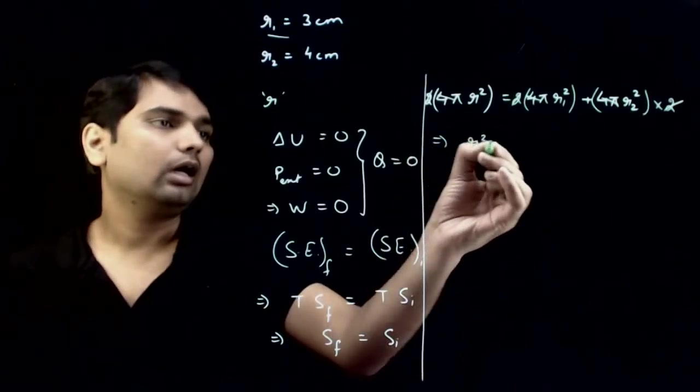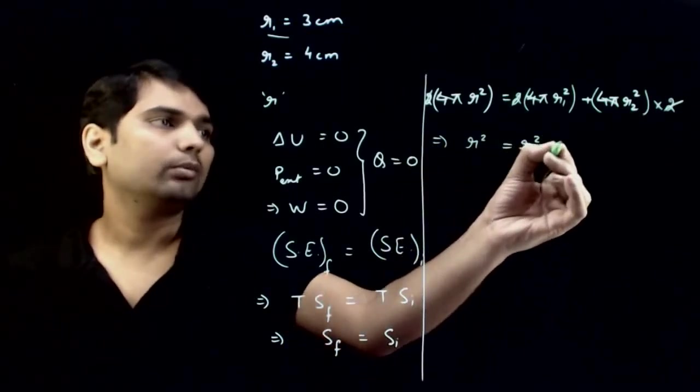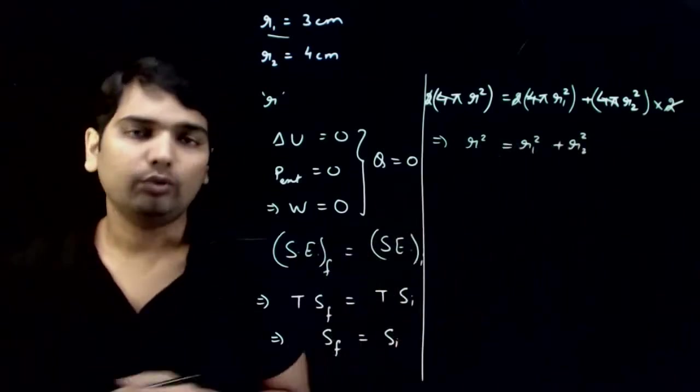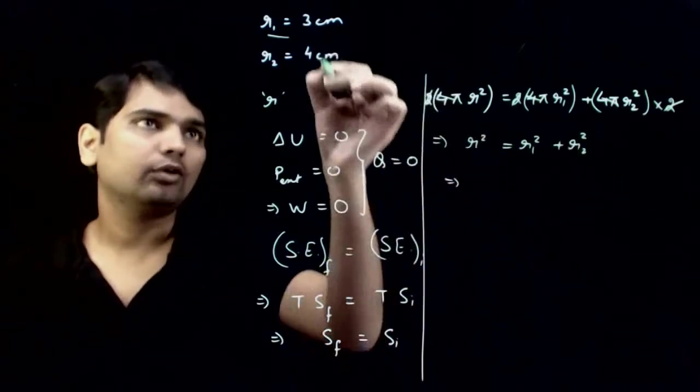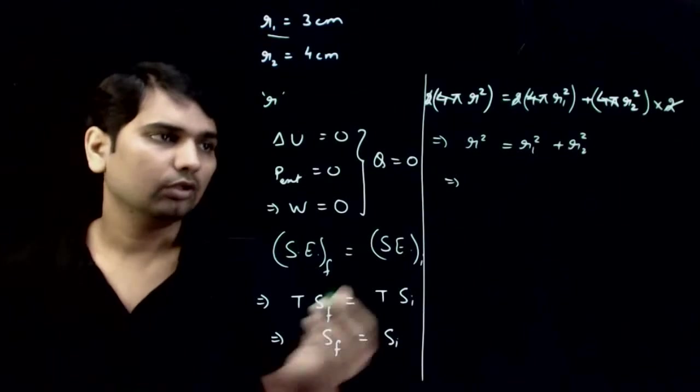We get r square is equal to r1 square plus r2 square, which implies if you substitute r1 and r2 values as 3 and 4.